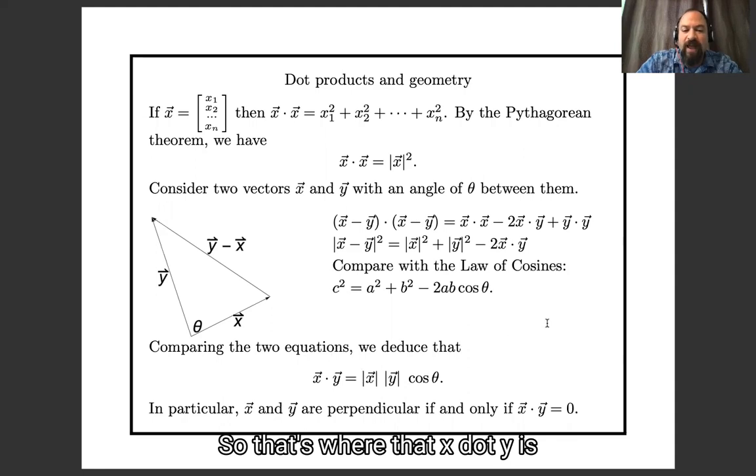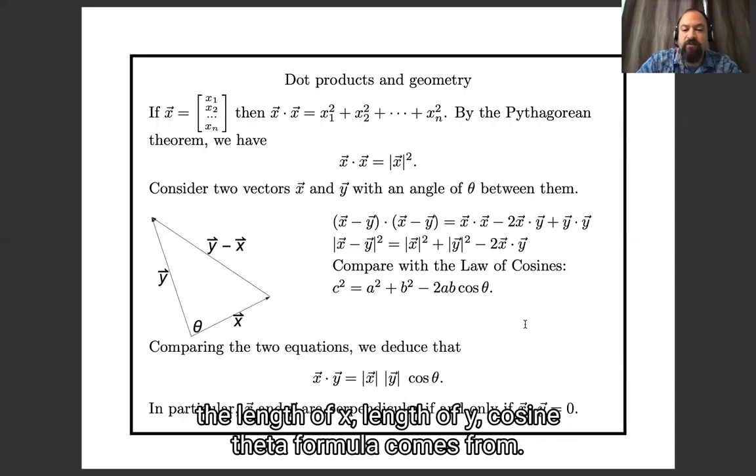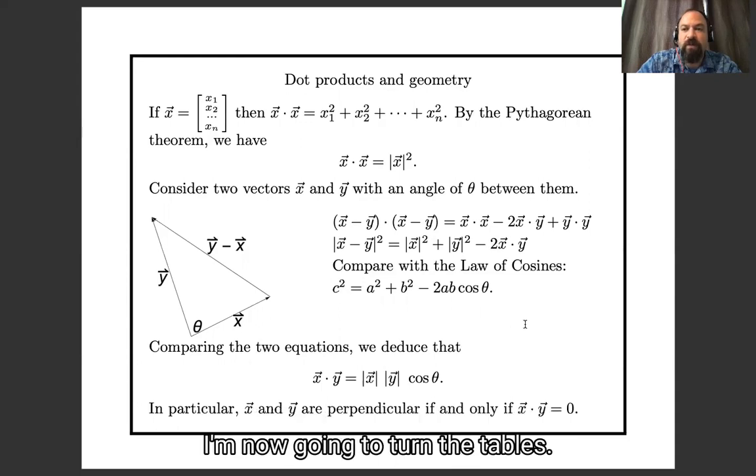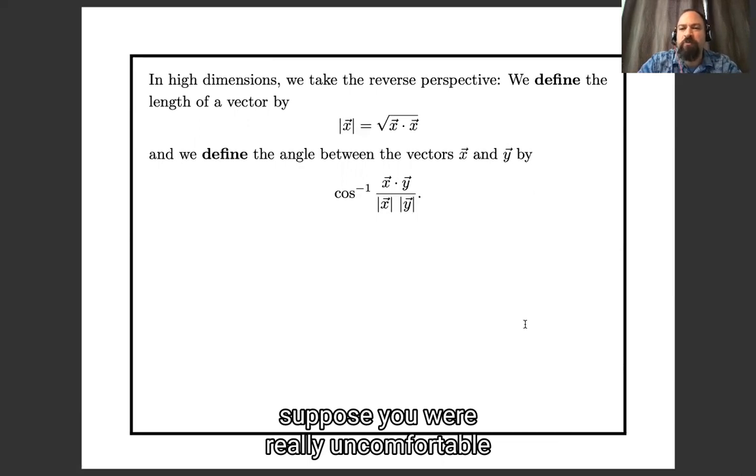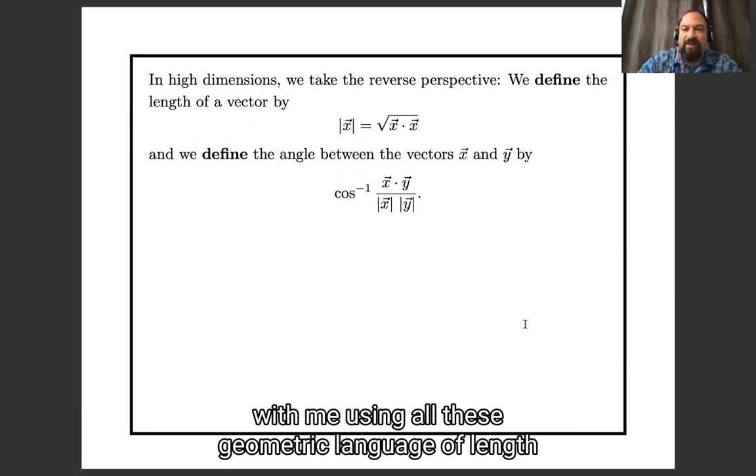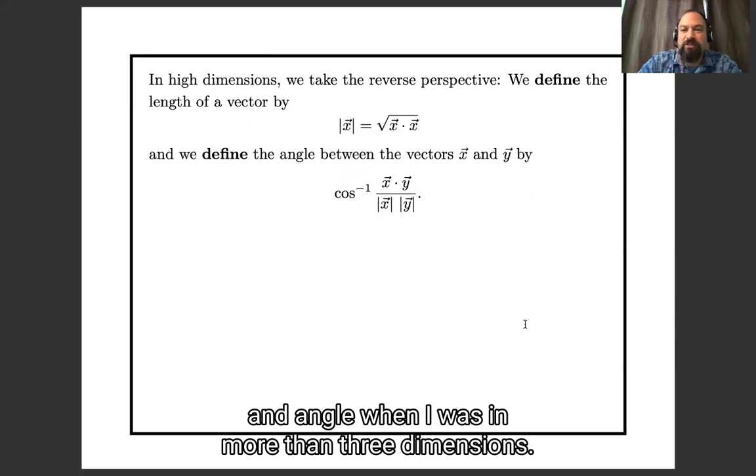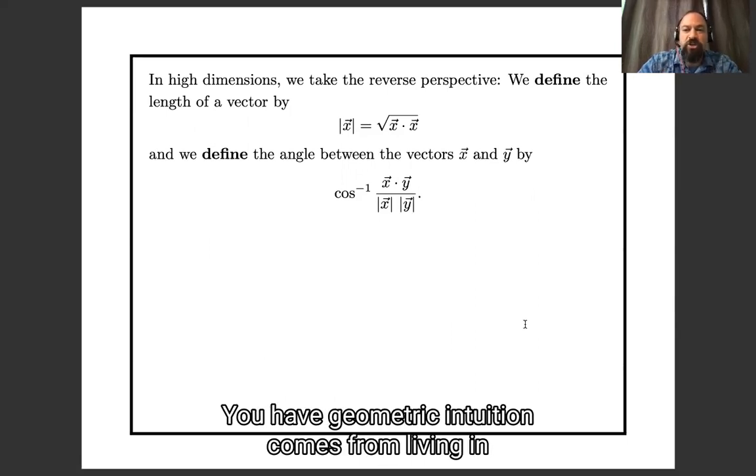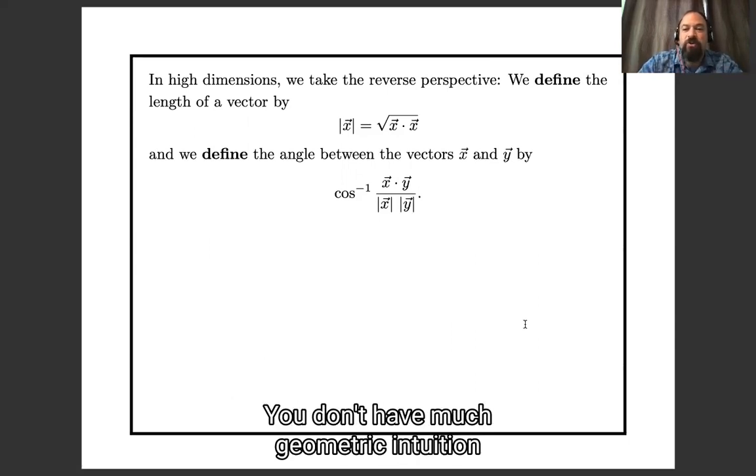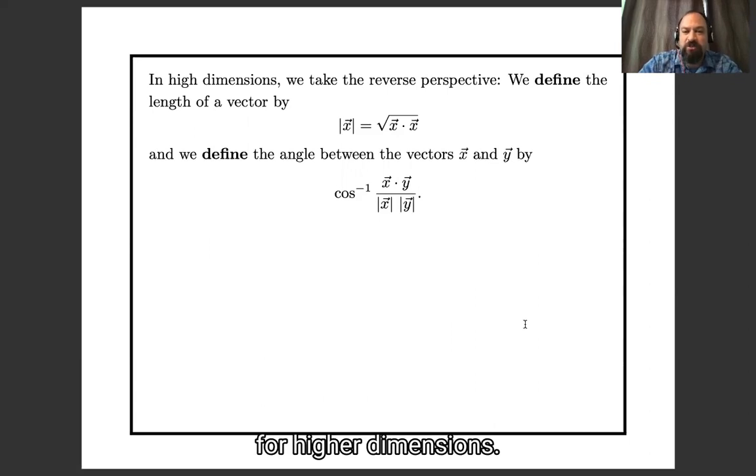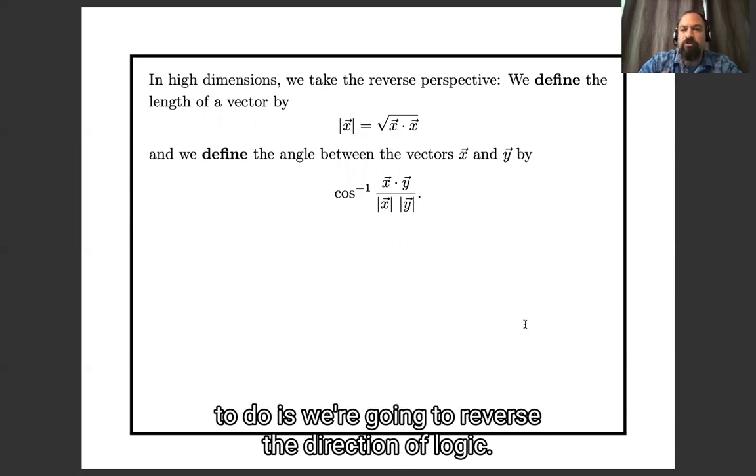Okay, so that's where that x dot y is length of x, length of y, cosine theta formula comes from. I'm now going to turn the tables. Suppose you didn't know geometry, or, more realistically, suppose you were really uncomfortable with me using all this geometric language of length and angle when I was in more than three dimensions. You have geometric intuition that comes from living in three-dimensional space your whole life and measuring lengths and angles in the space you live in. You don't have much geometric intuition for higher dimensions.